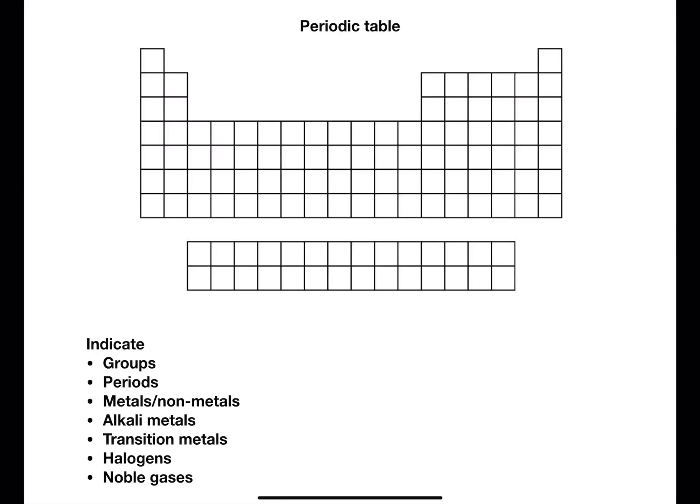For this first task I want you to pause the video and mark onto your periodic table to show the groups, the periods, where the metals and non-metals are, alkali metals, transition metals, halogens and noble gases.